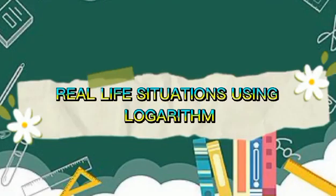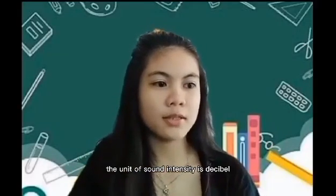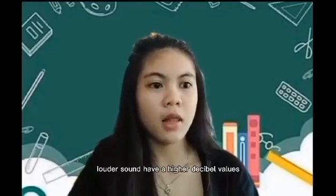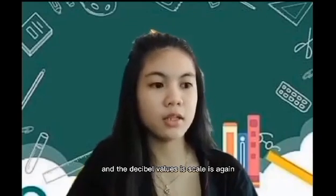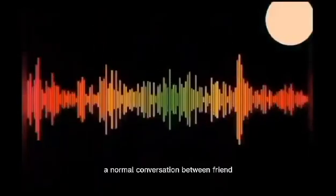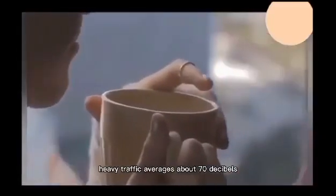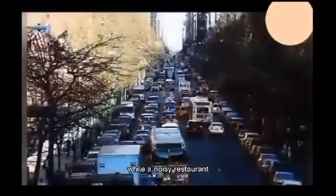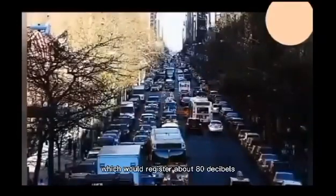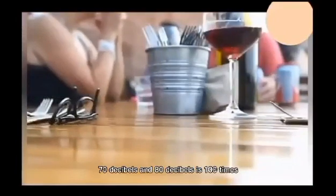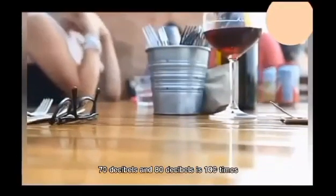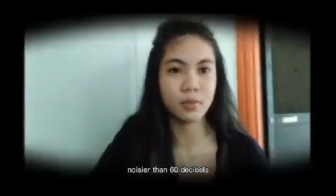Real Life Situations Using Logarithms: The unit of sound intensity is decibel. Louder sounds have higher decibel values and the decibel scale is logarithmic. For example, a normal conversation between friends has a sound intensity of about 60 decibels. Heavy traffic averages about 70 decibels, while a noisy restaurant would register about 80 decibels. On the decibel scale, 70 decibels and 80 decibels is 100 times noisier than 60 decibels.